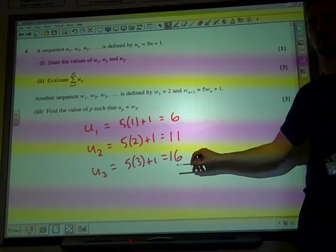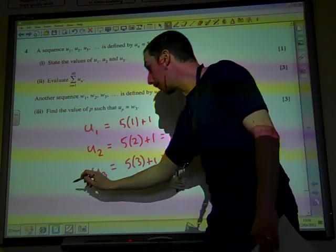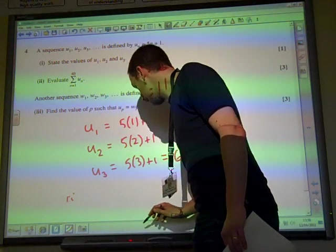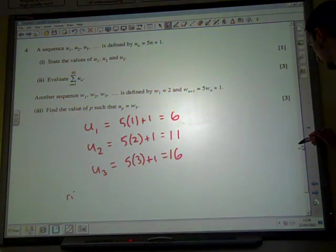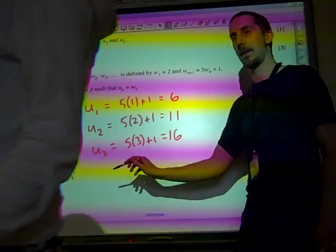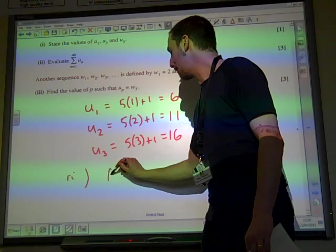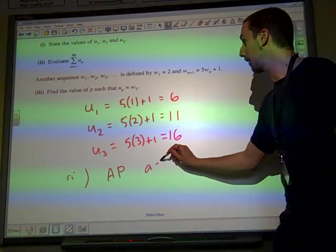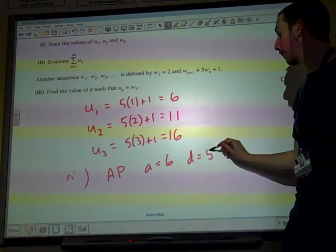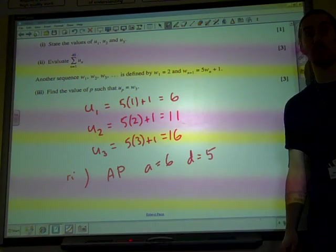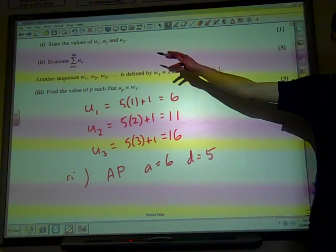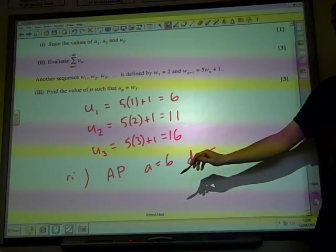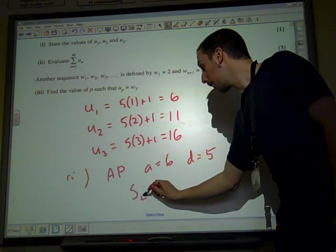So it's going up by the same common difference every time. So for part 2, we actually need to recognize that this is an AP, that the first term is 6, and the common difference is 5. It's going up by 5 each time. And the question wants us to find the sum of the first 40 terms.